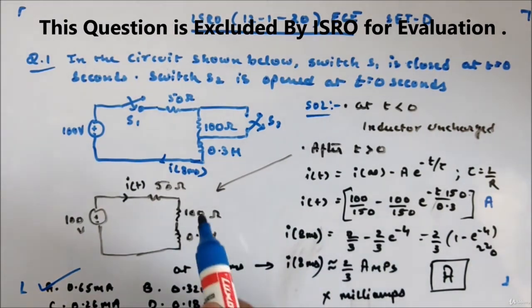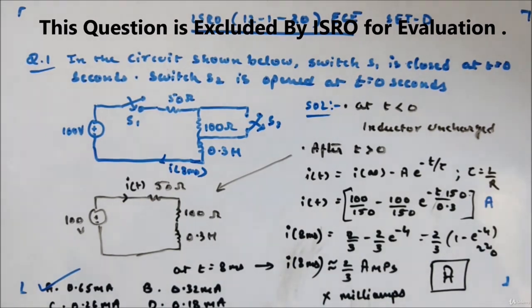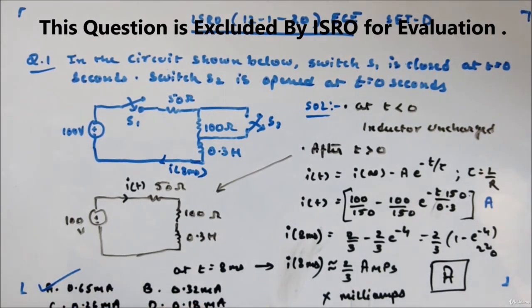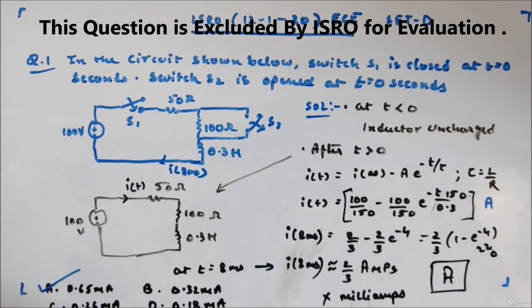So A will be your answer. The only mistake I saw is it's not in milliampere, it's in amperes. You'll get the answer in amps. The options were 0.65, 0.32, 0.18, 0.26, and 0.46. Out of that, answer will be A.